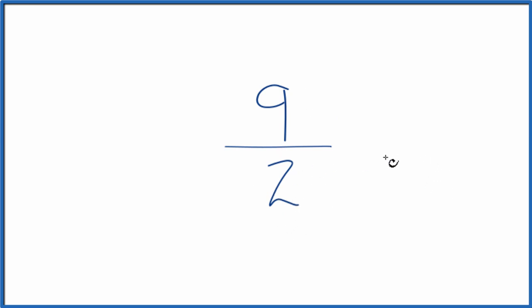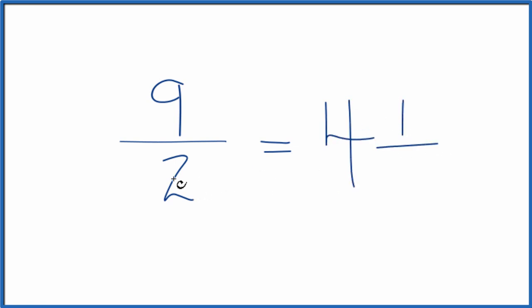So we could change it to a mixed number. To do that, we take the denominator and divide that into the numerator. So 2 goes into 9 4 times. 4 times 2 is 8 with 1 left over, then we bring the 2 across. And that's our mixed number.